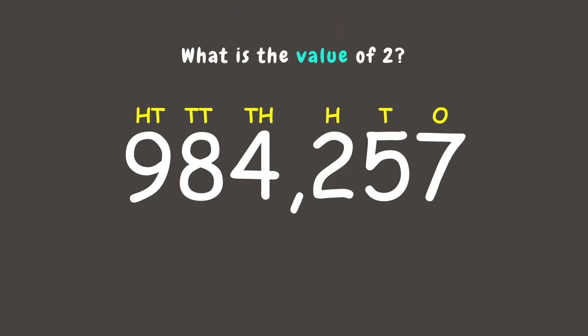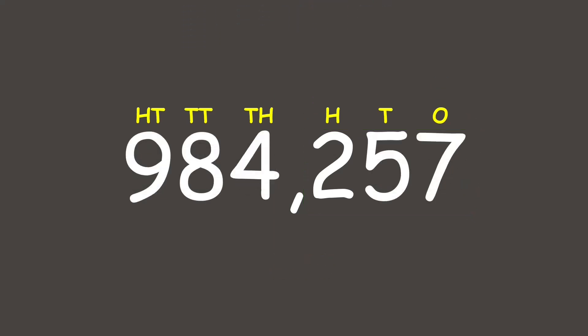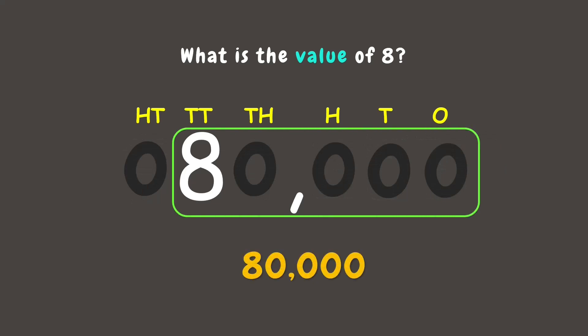Now what is the value of two? It is 200, which also means two times 100. Next, what do you think is the value of eight? It is 80,000, which means eight times ten-thousand.